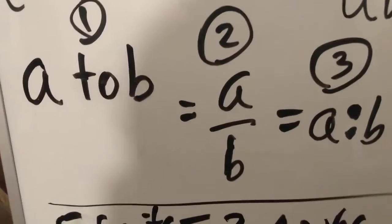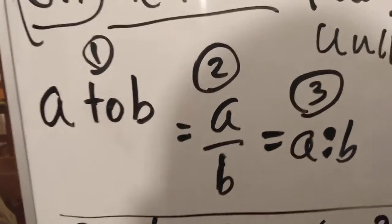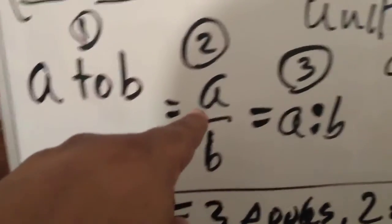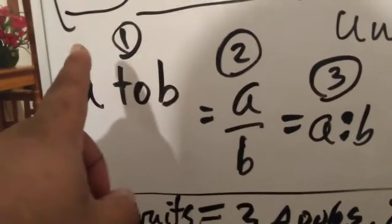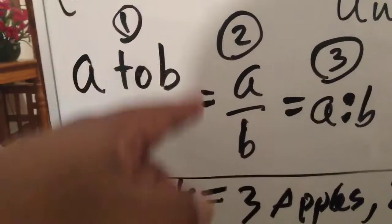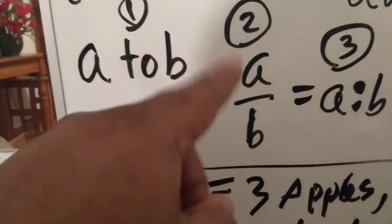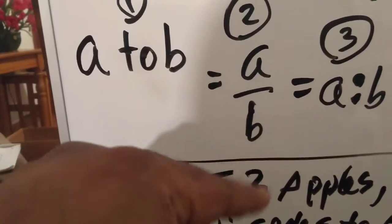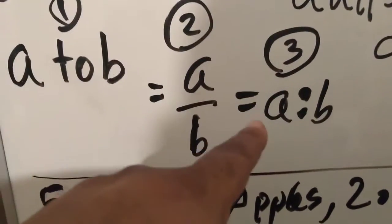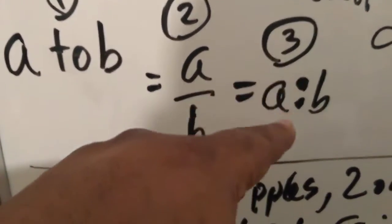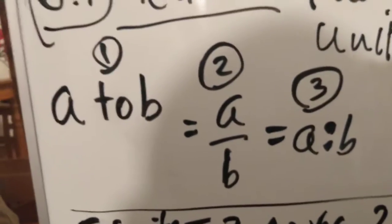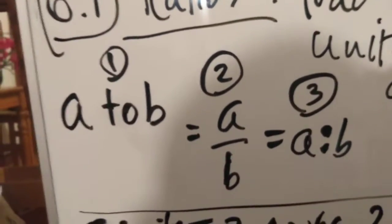There are three different types of ways of representing ratios. There is A to B. This is read A to B. You can also put it in a fraction format where that first thing comes top and the second thing goes bottom. And then you got the colon part where the first thing is first, the colon, and then the second thing is next. Those are the three ways of representing a ratio.